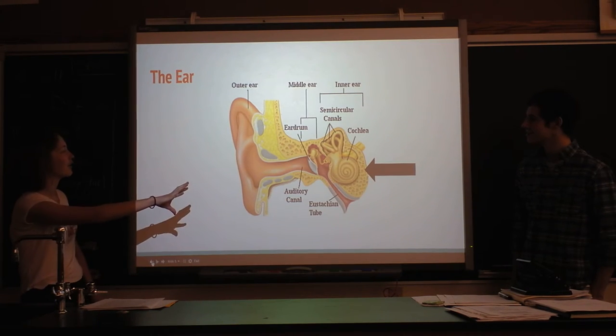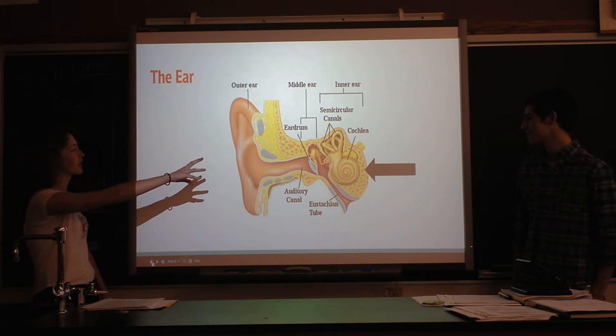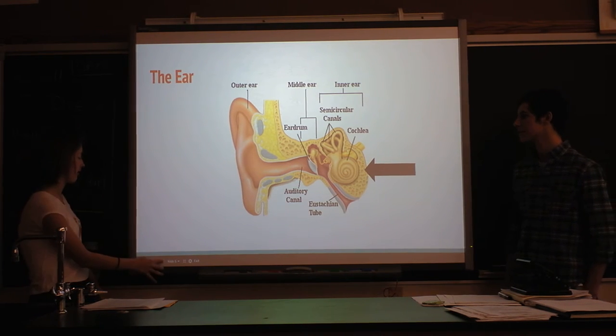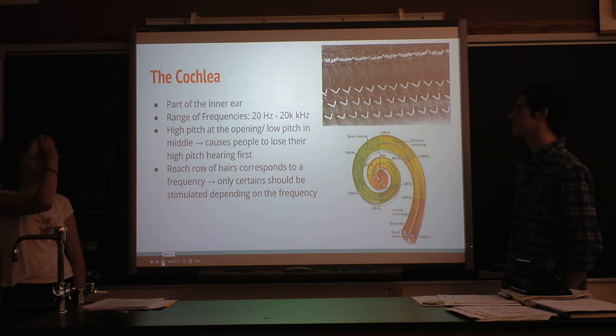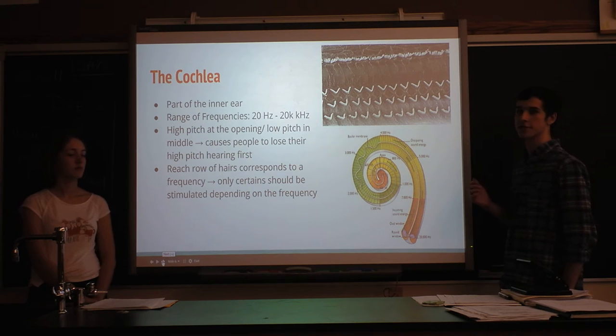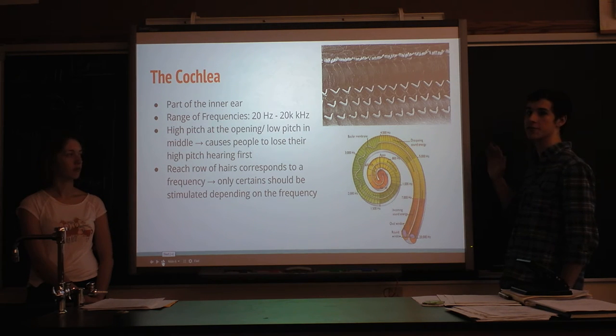This is the ear, and we focused on the cochlea, which is the inner ear, and that's where all the frequencies are. The way you hear is you have all these little hairs in your ear, and they have different resonant frequencies. When you hear a 1000 hertz tone play, the 1000 hertz little hairs resonate, and that's how you hear.